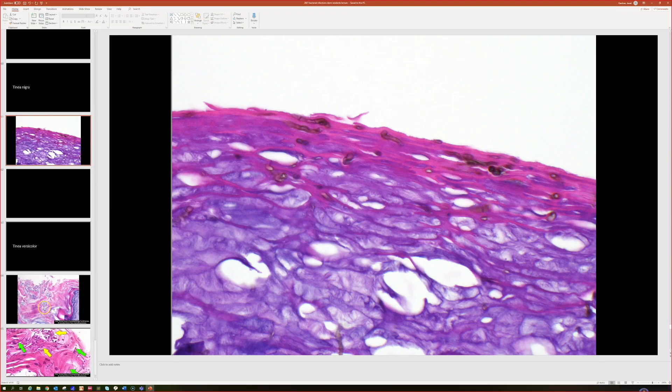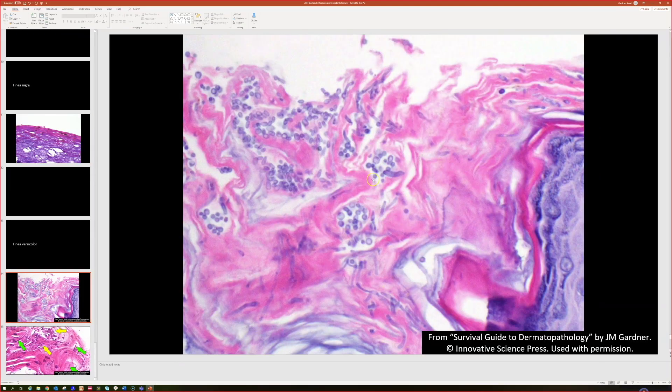And here for the final pictures, here's a closer view of very nice yeast, and you can see they're budding yeast. So when they're round and they're making buds, you know it's yeast, and then they've got the hyphal structures here.